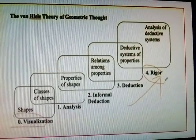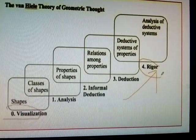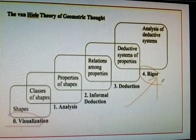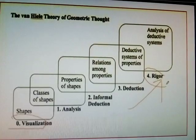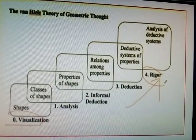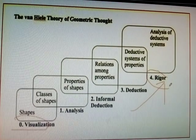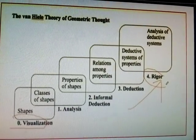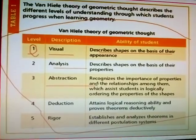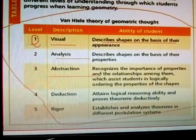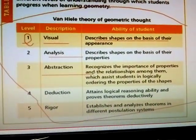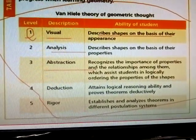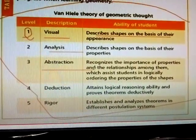The Van Hiele theory describes geometric thinking through levels: Visualization, Analysis, Informal Deduction, Deduction, and Rigor. In Visualization, shapes are described based on their appearance. In Analysis, shapes are described based on their properties.